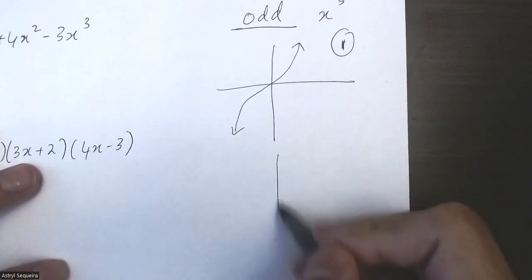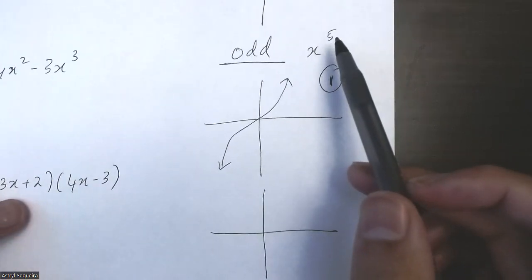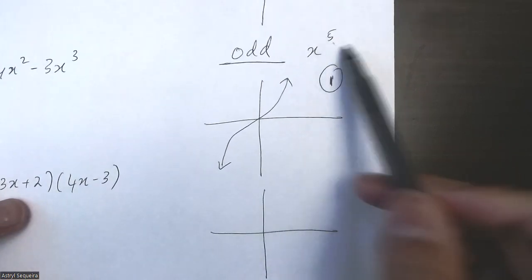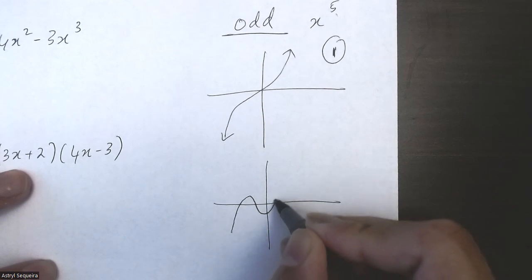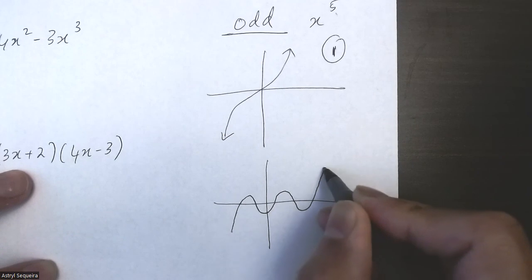We also know that x^5 has a maximum number of turning points of four. So if I draw four turning points and continuously cut through the axis, that's two, that's three, and this is the fourth turning point right there.